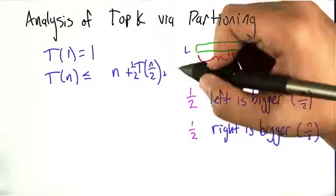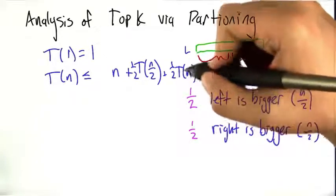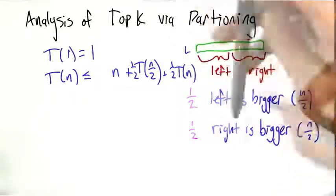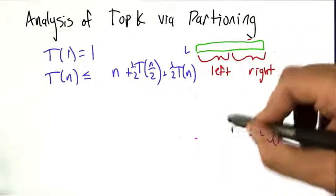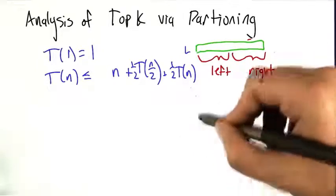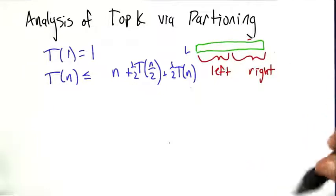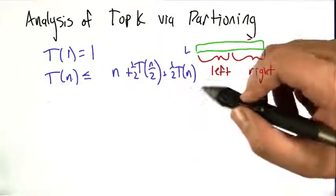But we might also get unlucky and have to recurse on the larger half, which could involve actually something almost the size of the entire list. So that's kind of a weird recurrence relation because it has probabilities in it. But really, we want a bound on the running time. How many steps is it going to take, in this case on average, for top k to finish its work? And this gives us an upper bound. This recurrence relation gives us an upper bound.